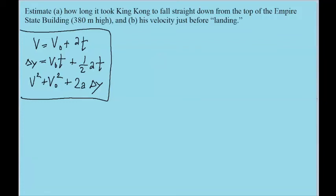In this problem we have a situation where an object, in this case King Kong himself, is falling down a height. Now we assume that the acceleration is constant, that the acceleration is g, 9.8 meters per second squared.